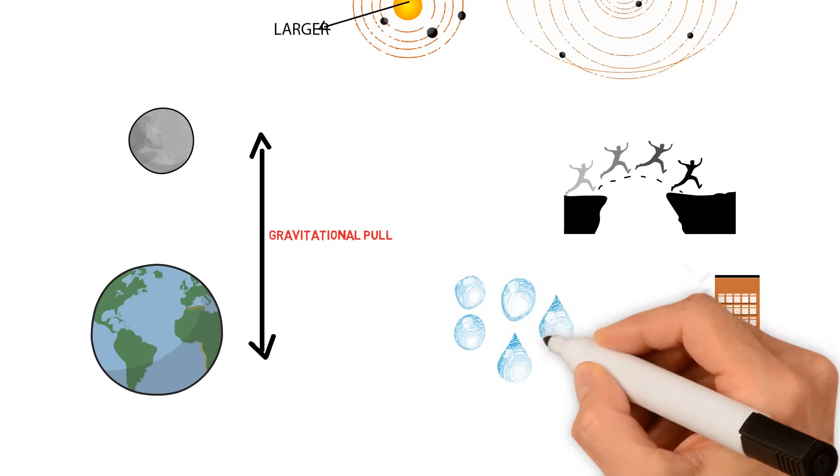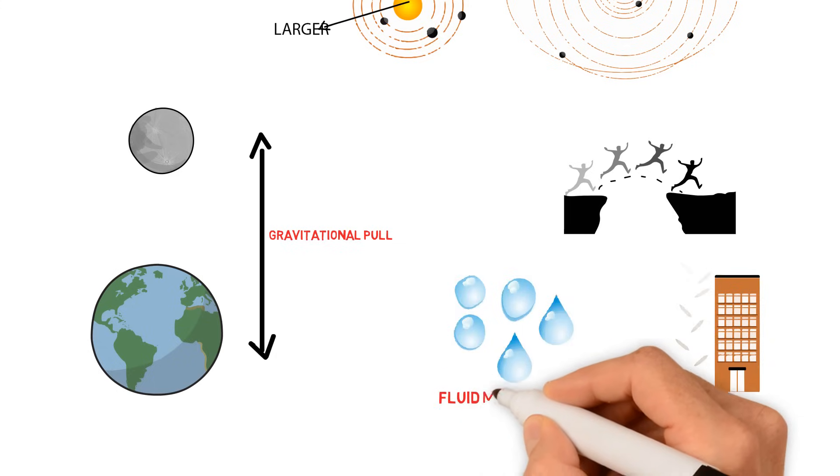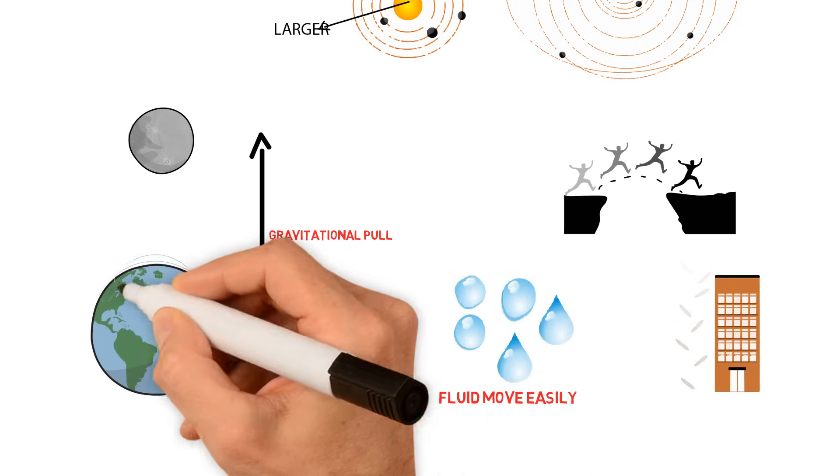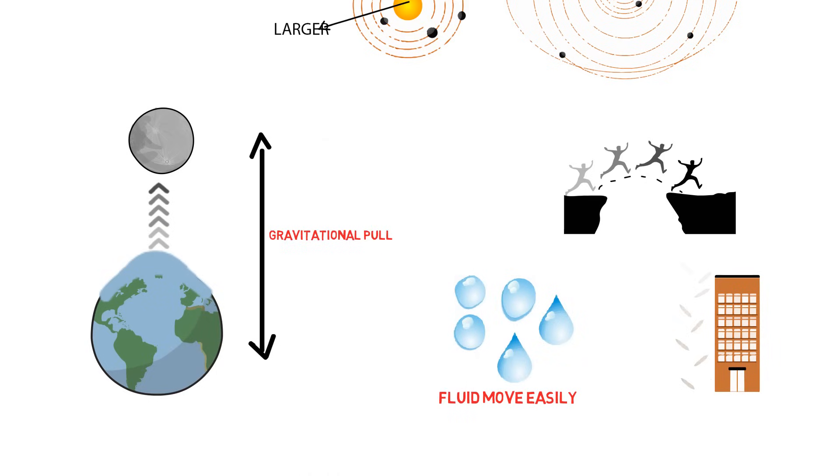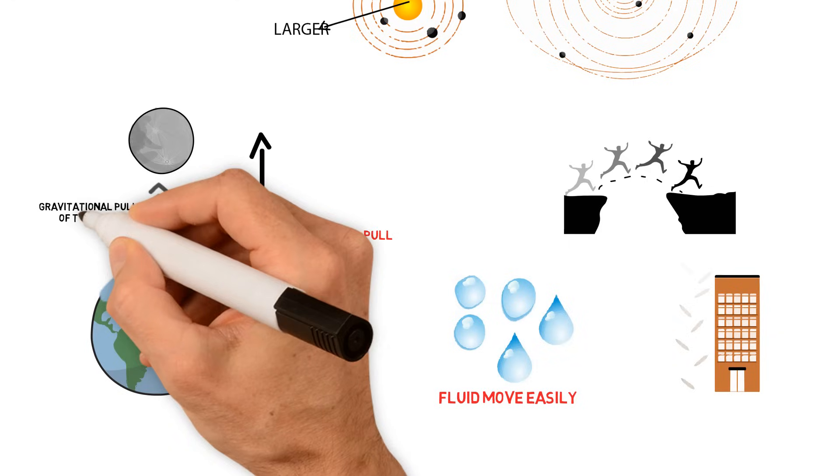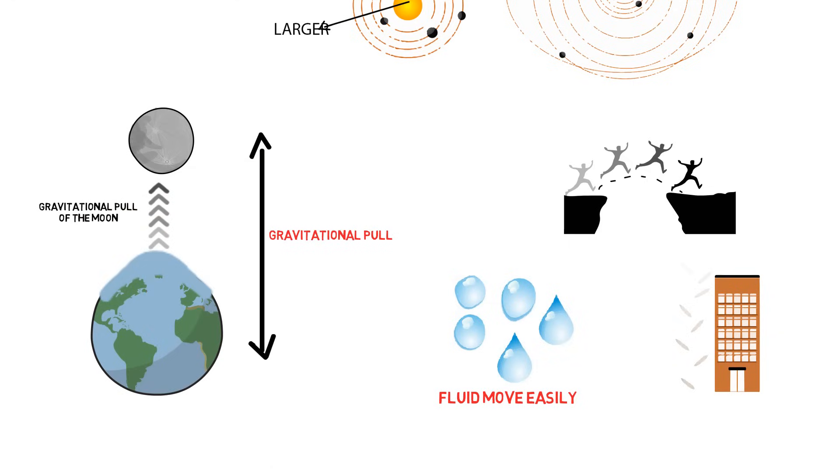Now when it comes to ocean, water is fluid, and fluids move more easily. So when water on earth in a particular region is directly beneath the moon, then the water gets pulled by the gravitational force towards the moon. And that creates a bulge, meaning a tide on the surface of the ocean.